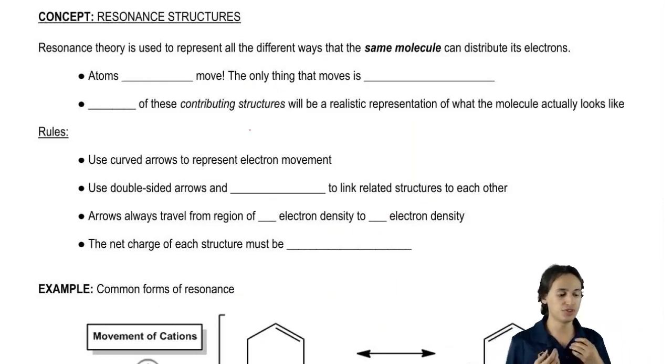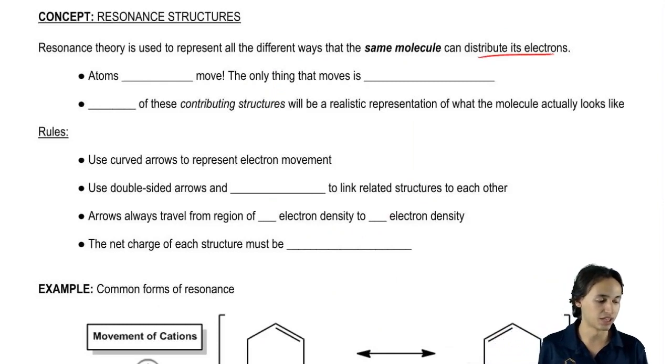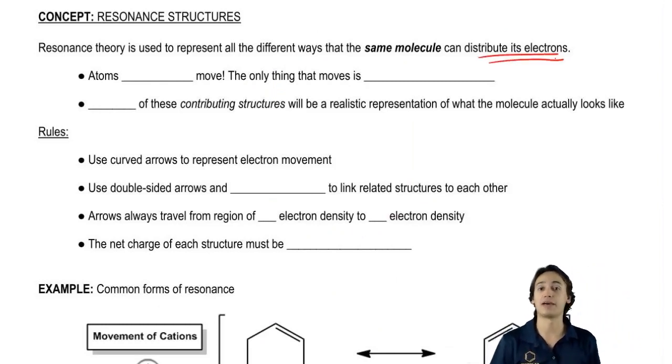Resonance theory is used to represent the different ways that the same molecule can distribute its electrons. What that means is that even though the connectivity or how atoms are connected isn't going to change, the electrons between them can move sometimes. And that's what resonance theory is all about.